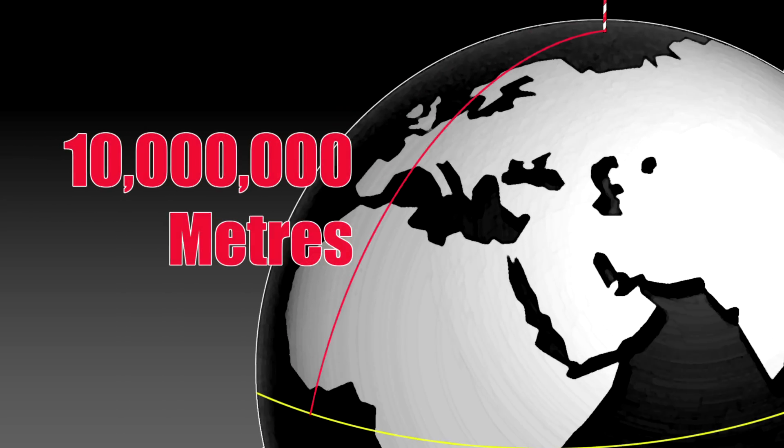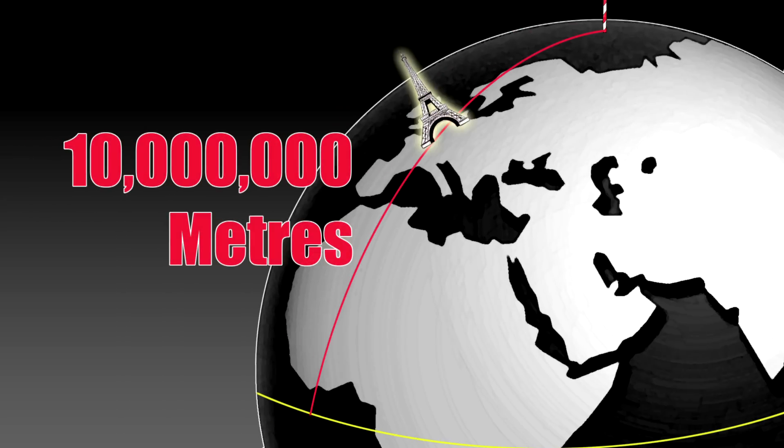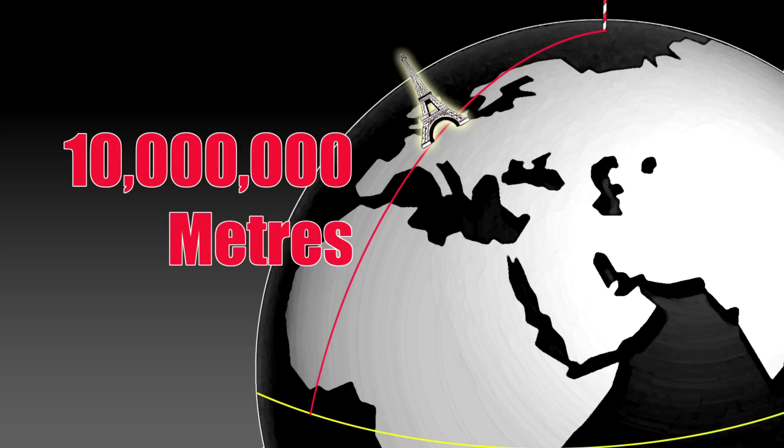The SI unit was defined, and the meter, for example, was defined to be one ten-millionth the distance from the North Pole to the equator going through Paris, so you can tell who invented this particular system of units. That was the original definition of the meter, and then everything kind of flowed from that.